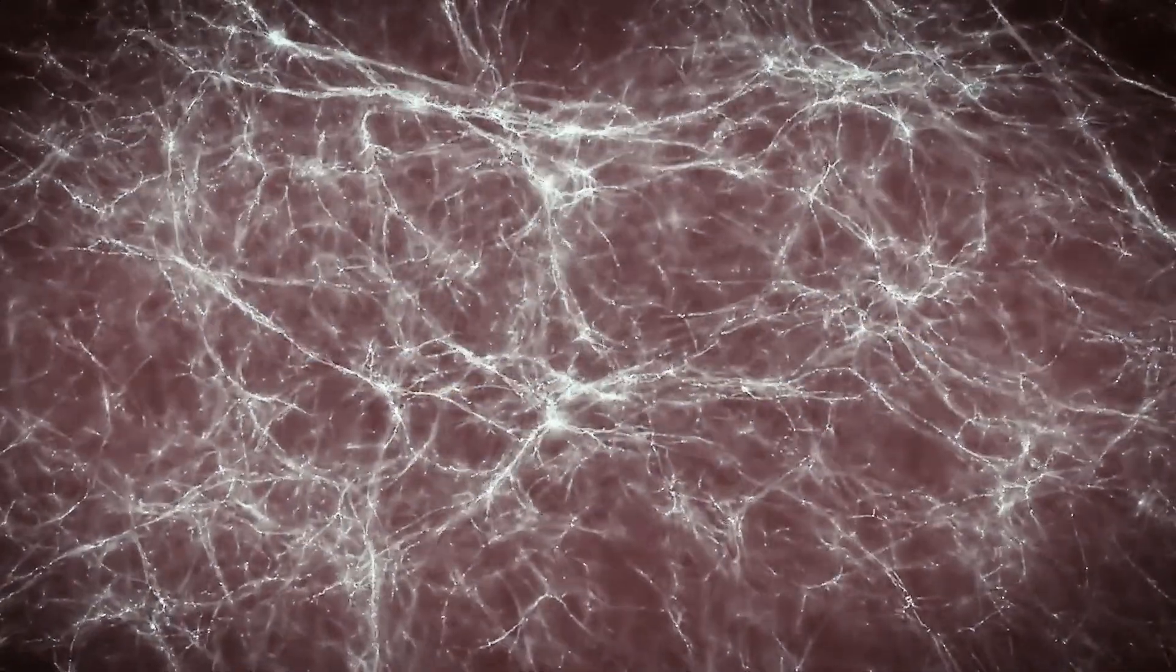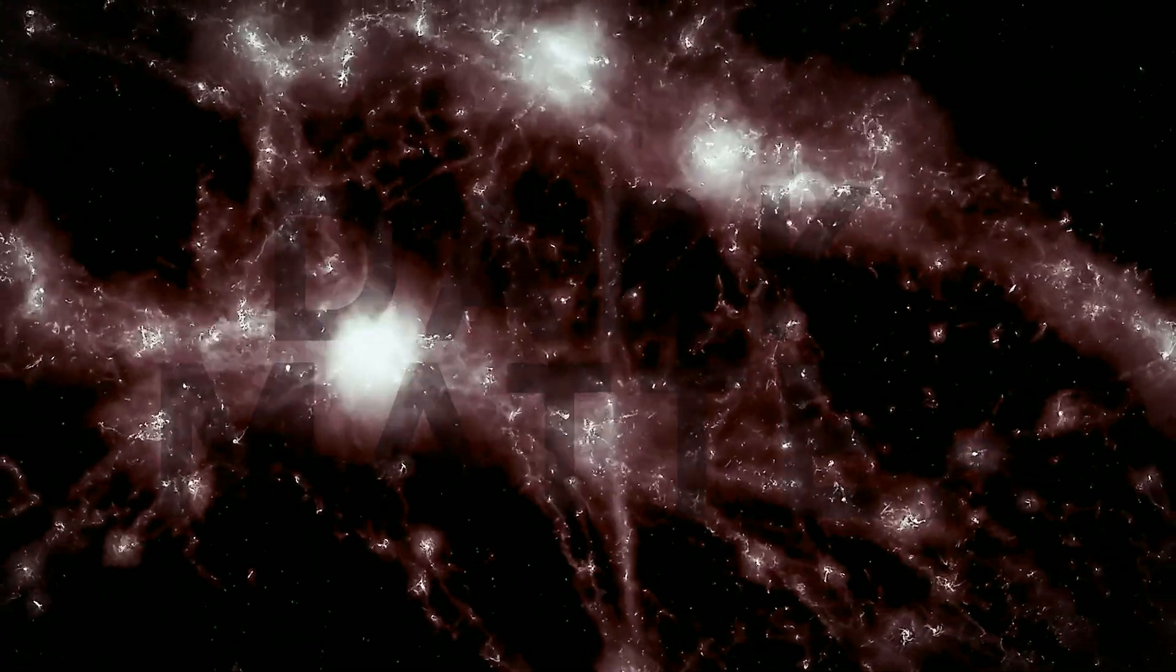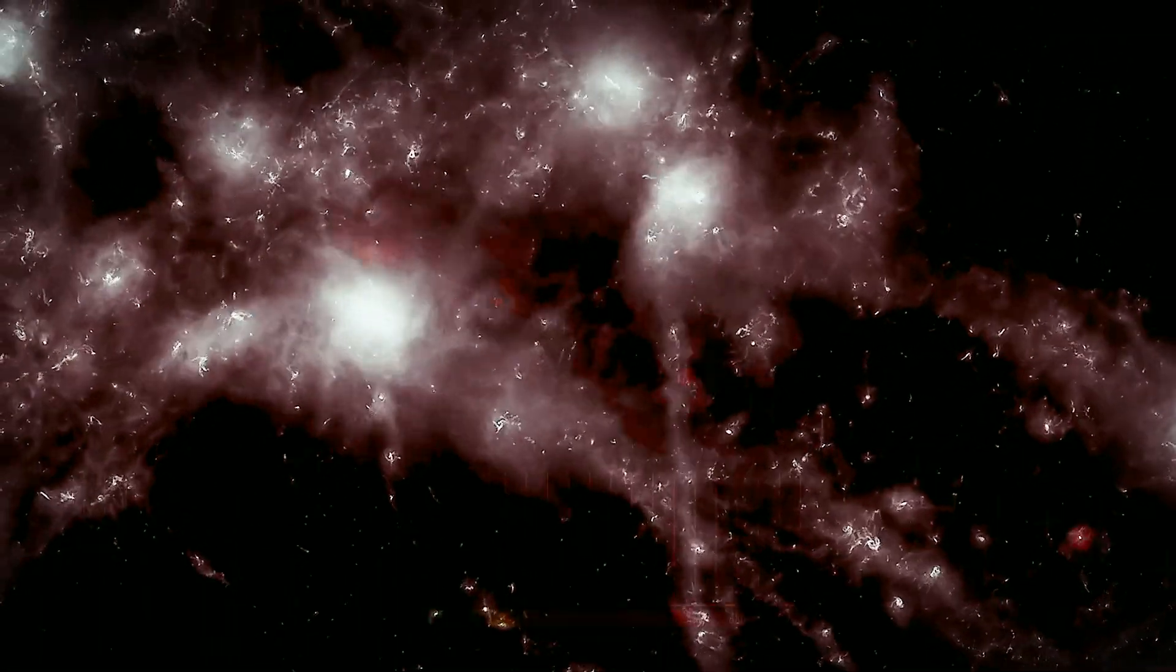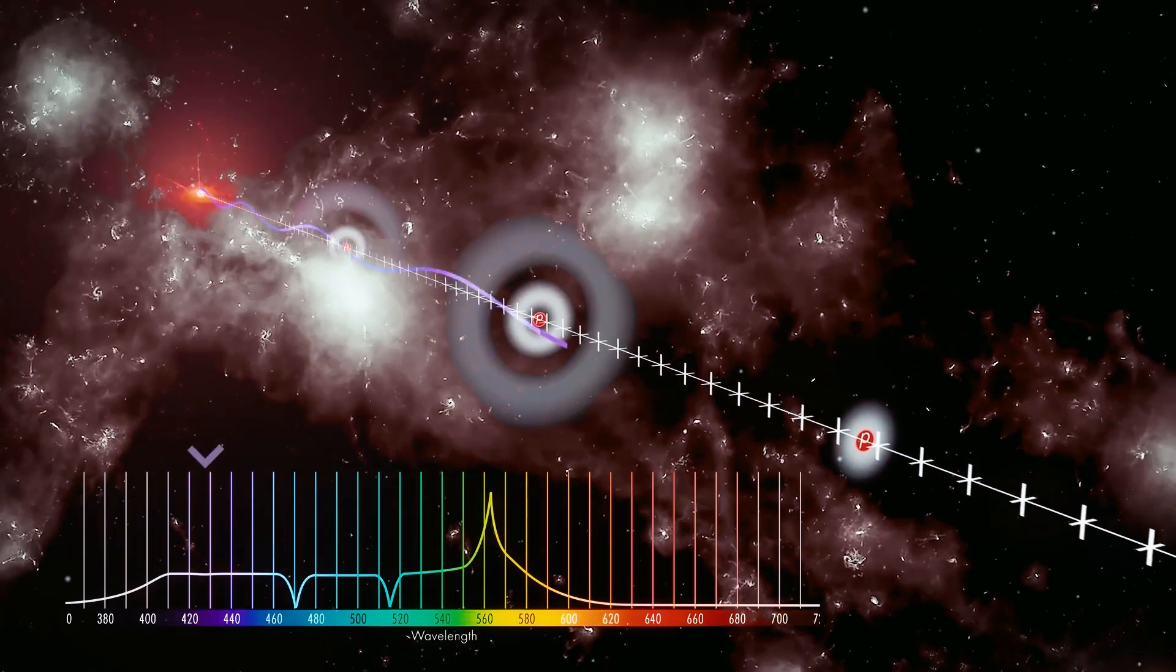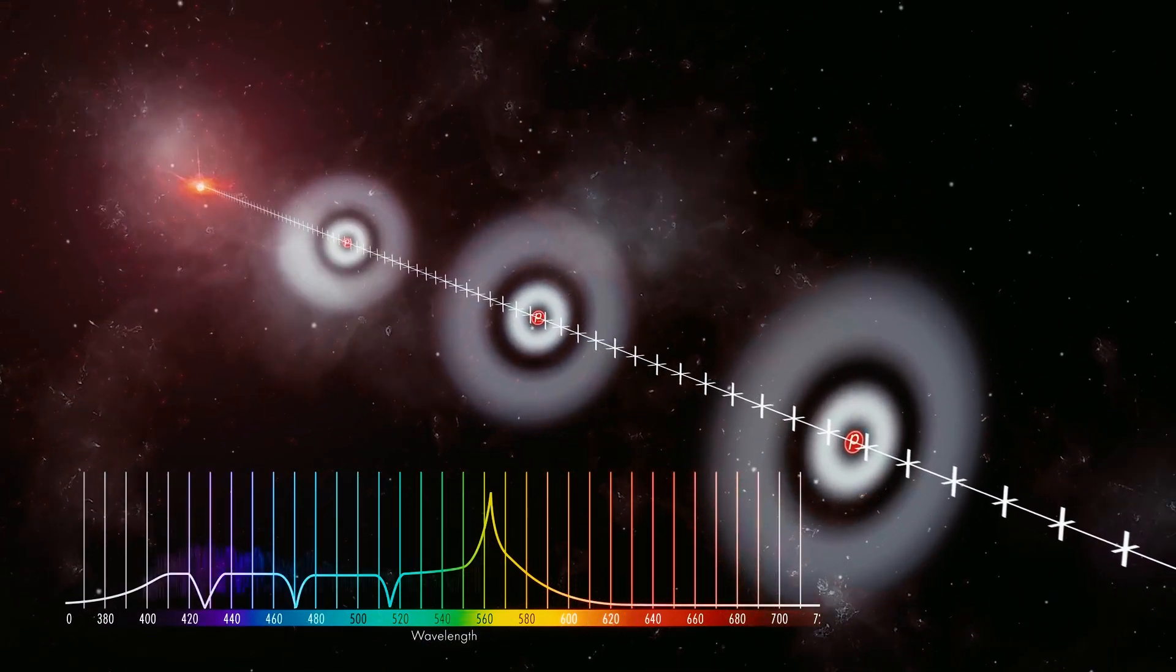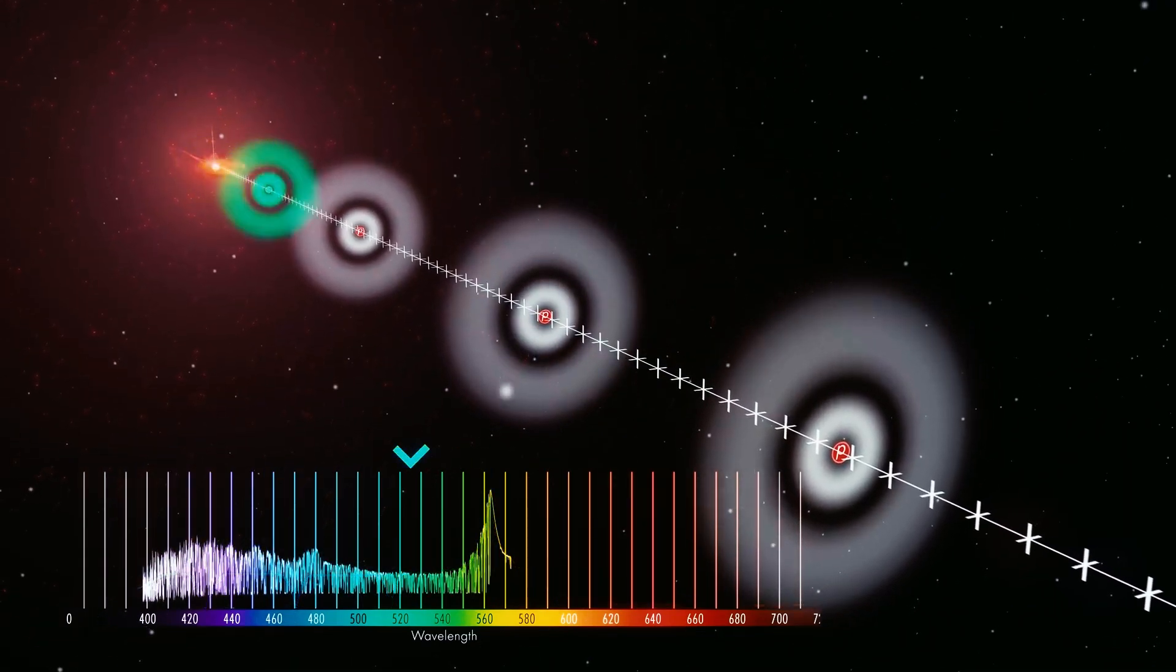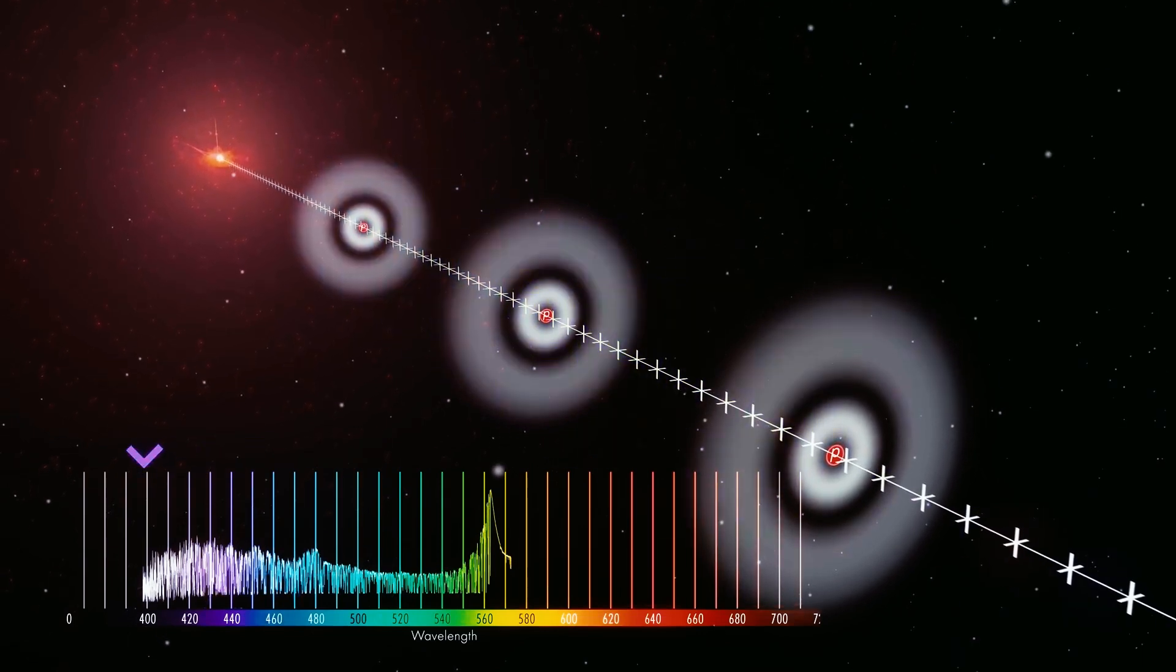This dark matter is more accurately described as transparent or ghostly since it cannot emit, absorb, or reflect electromagnetic waves such as light, radio signals, ultraviolet, and x-rays. Electromagnetic waves pass through dark matter without interacting with it, making it invisible to us.